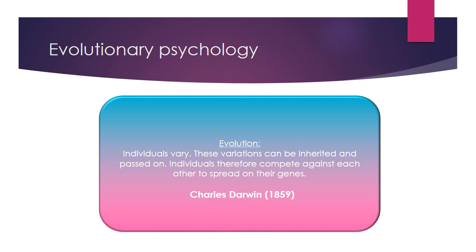To begin, we'll talk about evolution itself. Darwin states that individuals vary according to their species. Their variations can be inherited and passed on to other generations; therefore individuals compete for resources and try to be successful in reproduction. This process leads to evolutionary change and the species adapt to their environment for their survival.